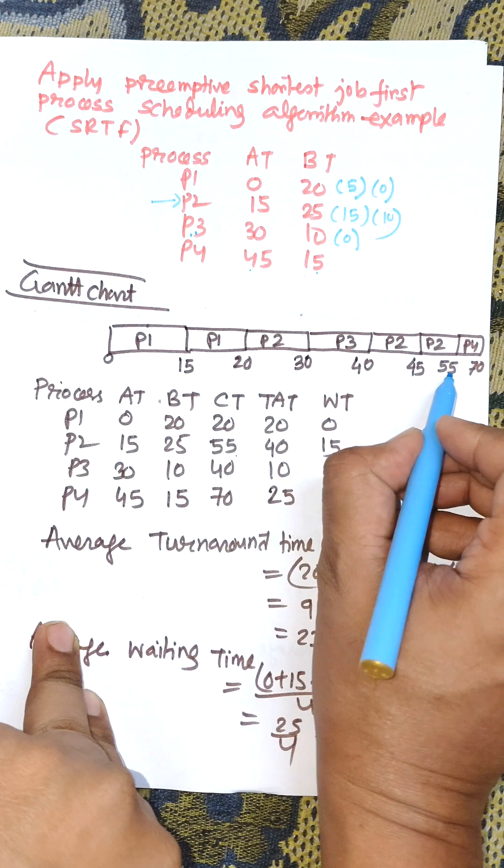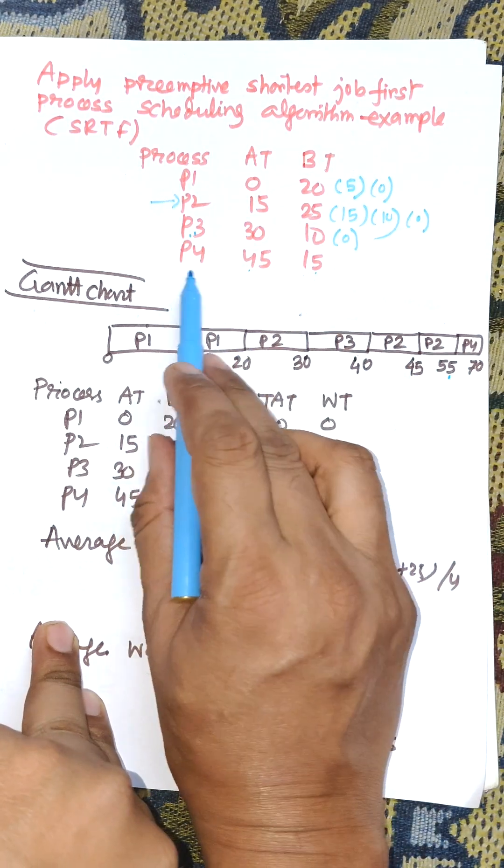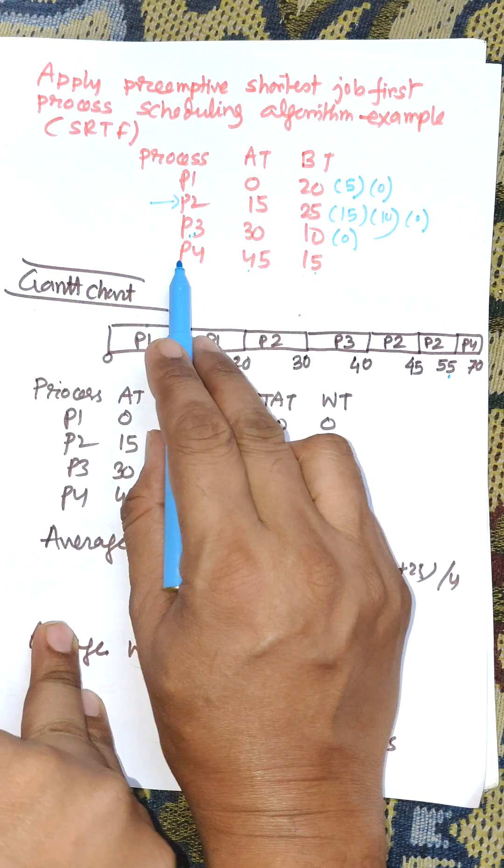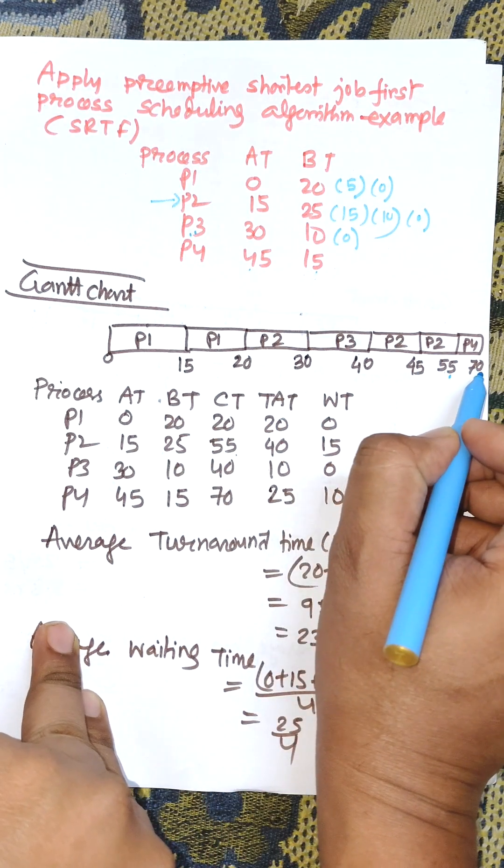P2 executes for 10 more units, 45 plus 10 equals 55, so it is completed. Now P4 is the only process, so it will finish its execution. 55 plus 15 equals 70.